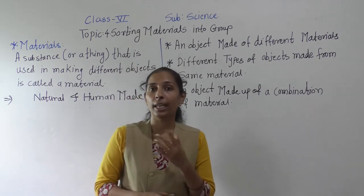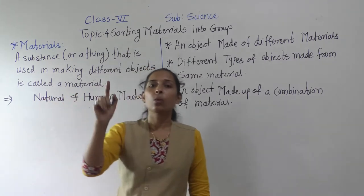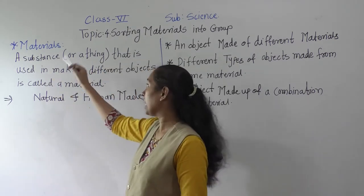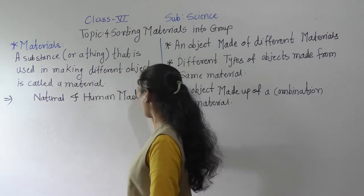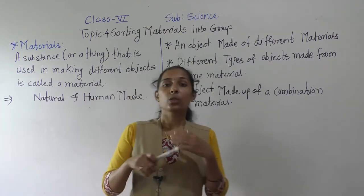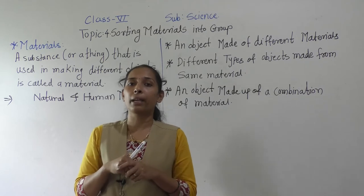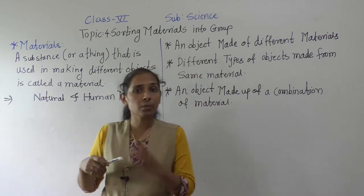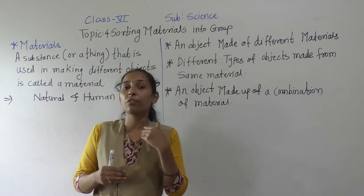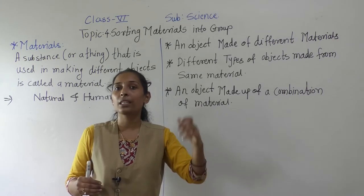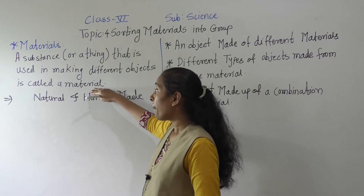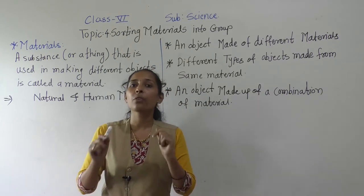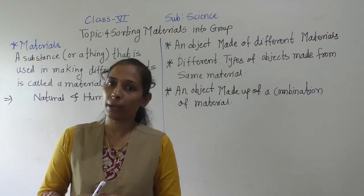Today in this video we will move to the next point, that is materials. What is meant by materials? A substance or a thing that is used in making different objects is called a material. There are so many different objects around us, and each object is made up of a different substance — that substance is called a material. All objects are made up of material.